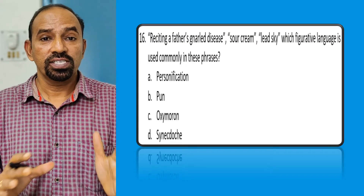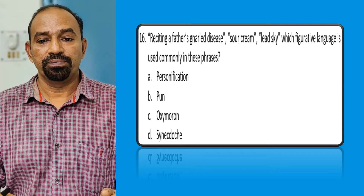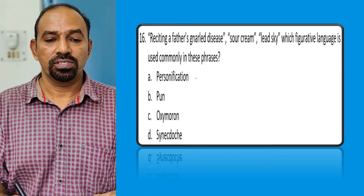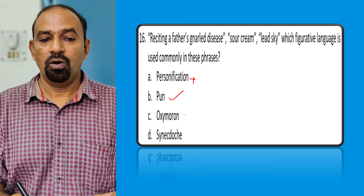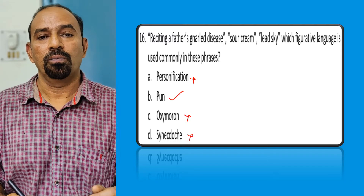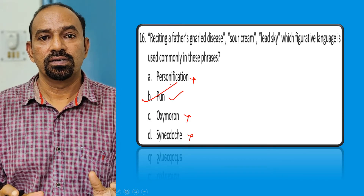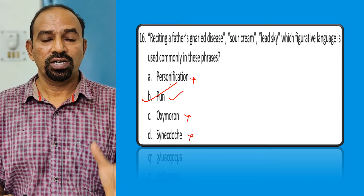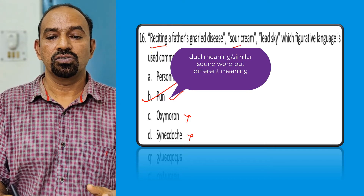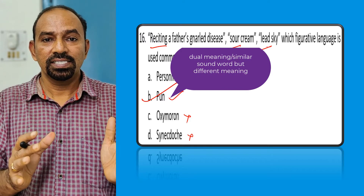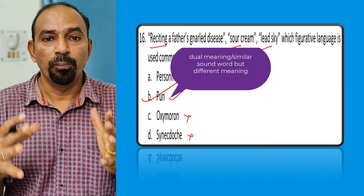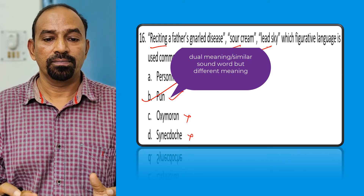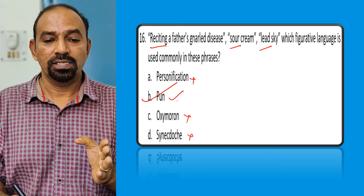Question sixteen: Which figurative language is commonly used in 'reciting a father's gnarled disease', 'sore cream', and 'lead sky'? The answer is pun. The words 'reciting', 'sore', and 'lead' each have two meanings — when pronounced, an alternate meaning is obtained without seeing the real spelling. That dual meaning effect is why we call it pun.